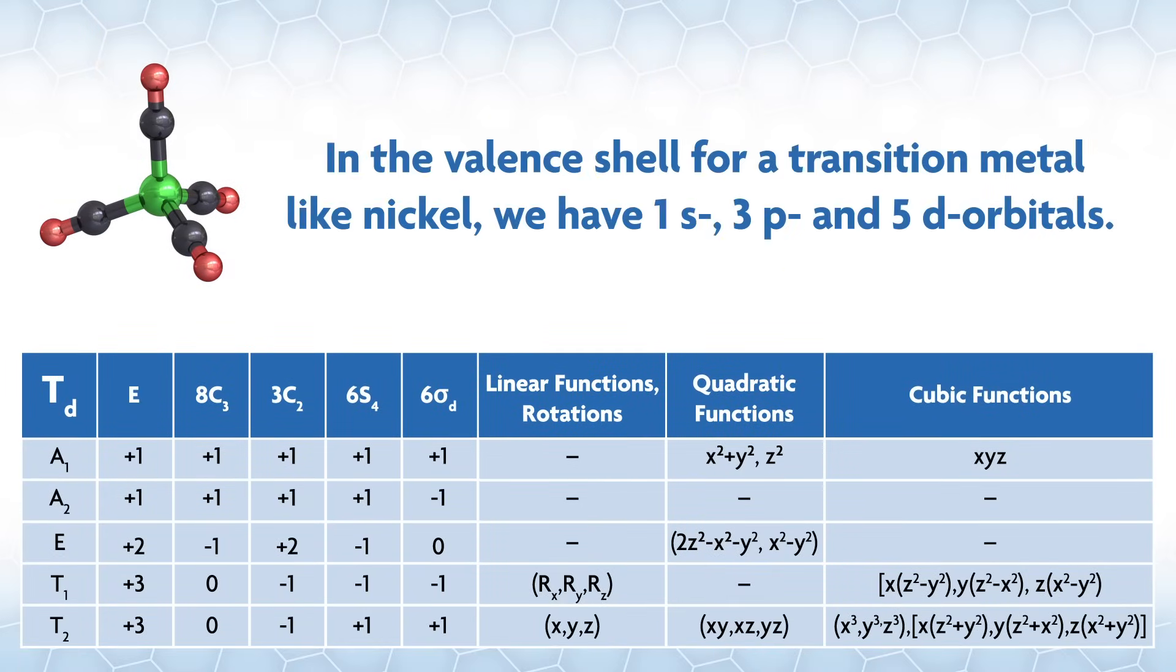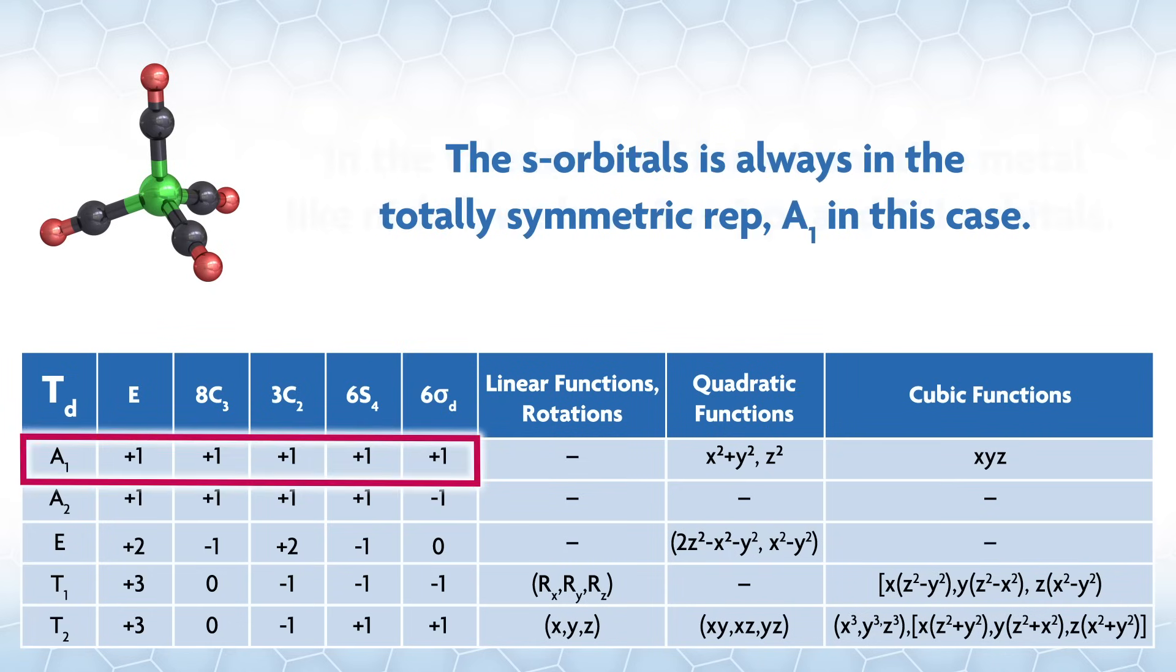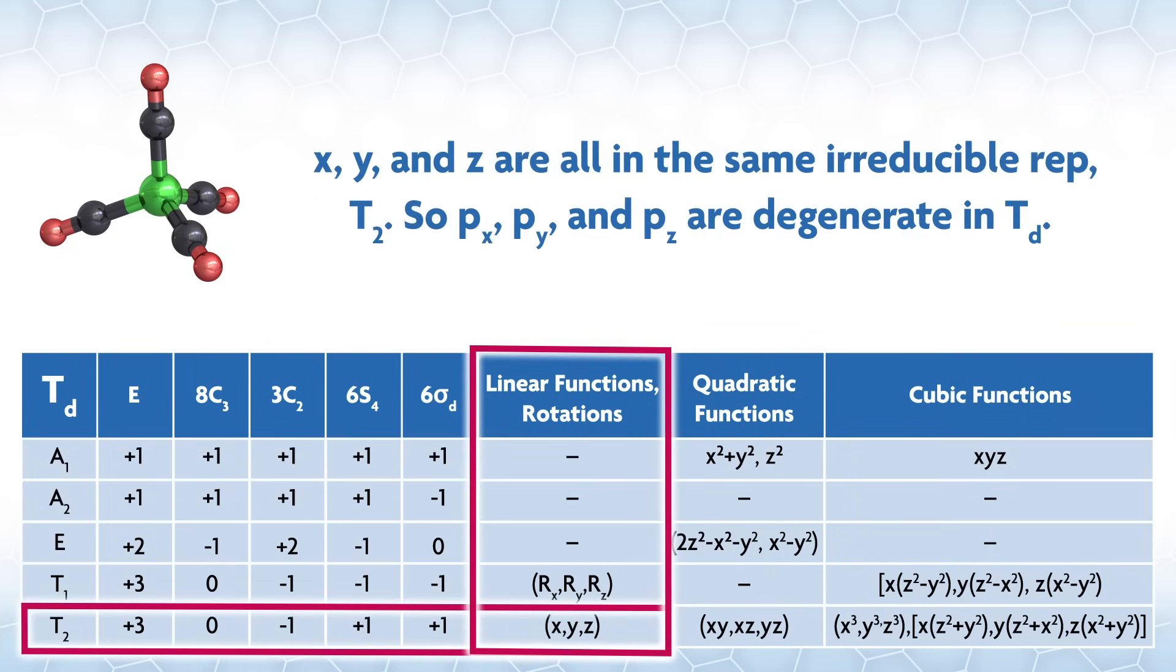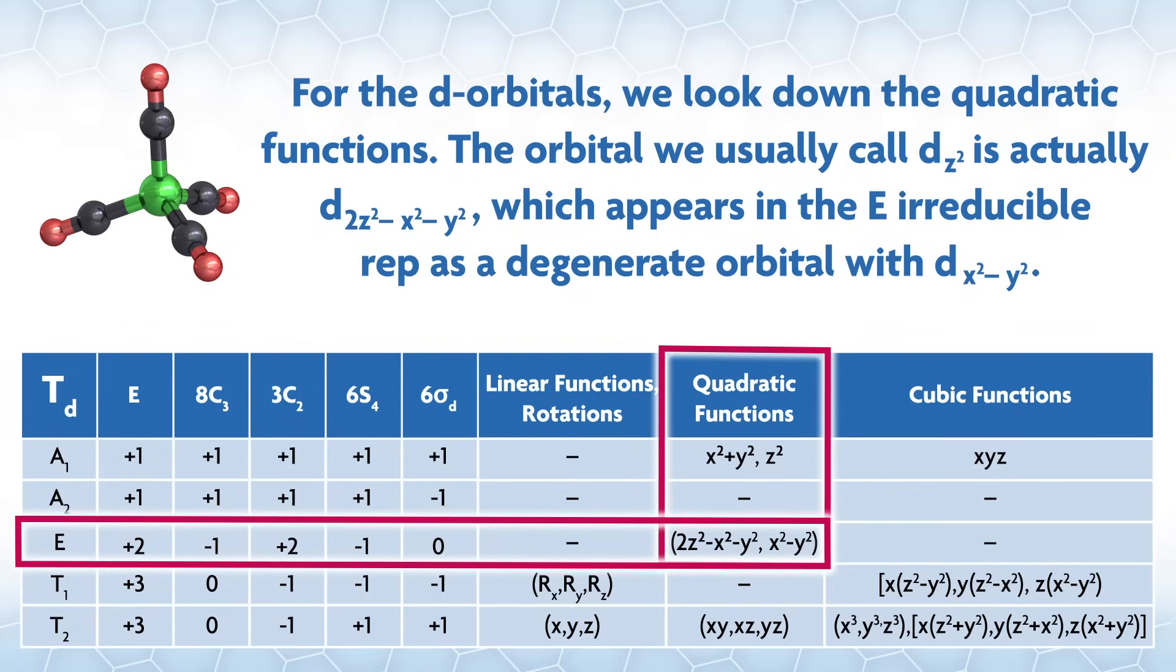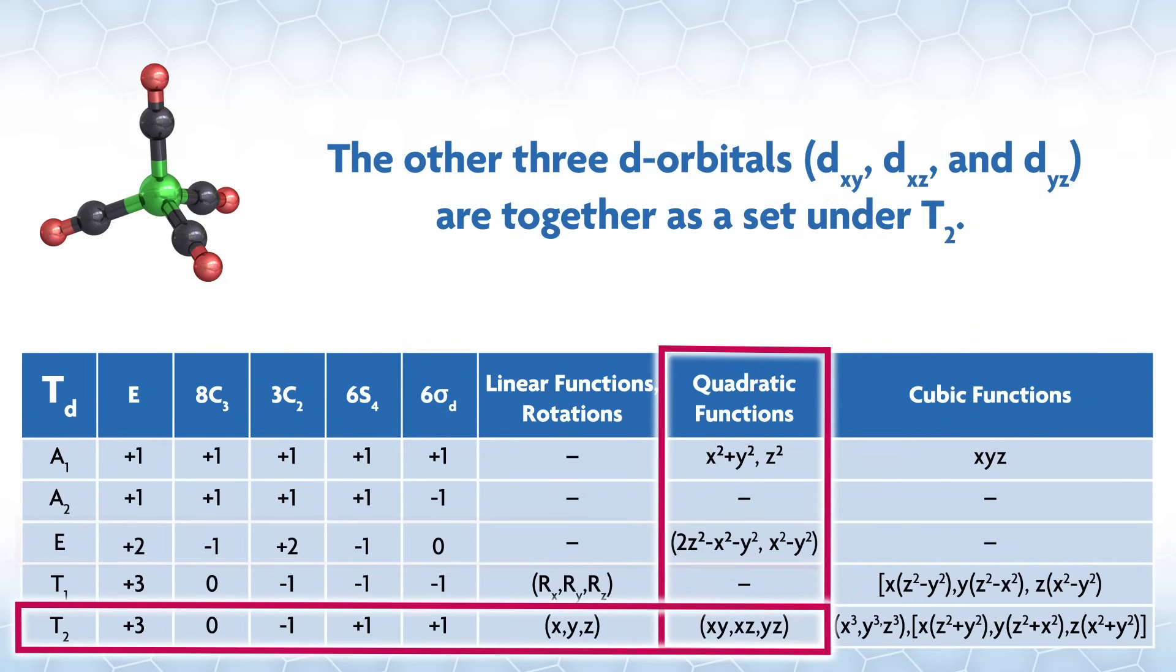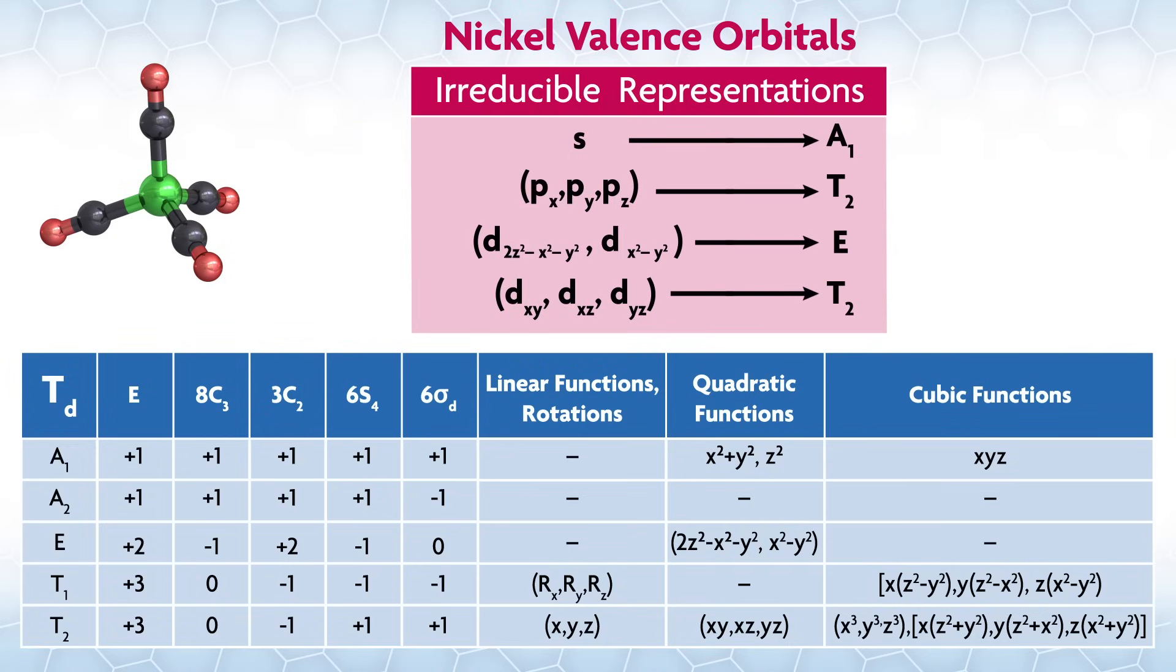In the valence shell for a transition metal like nickel, we have 1s, 3p, and 5d orbitals. The 1s orbital is always in the totally symmetric rep, A1 in this case. Looking down the column at the linear functions, you find that x, y, and z are all in the same irreducible rep, T2. So px, py, and pz are degenerate in Td. For the d orbitals, we look down the quadratic functions. The orbital we usually call dz² is actually 2dz² - x² - y², which appears in the E irreducible rep as a degenerate orbital with dx² - y². The other 3d orbitals, dxy, dxz, and dyz, are together as a set under T2. We have managed to assign all 9 valence orbitals for a central nickel in a Td system.